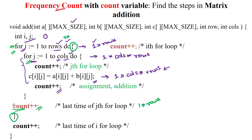Finally, when i exceeds the row count (i greater than rows), the i-loop exits. This exit consumes only one unit of time, and it happens only once.